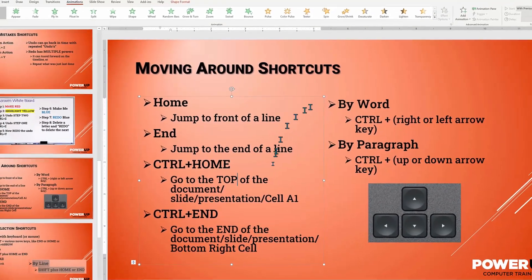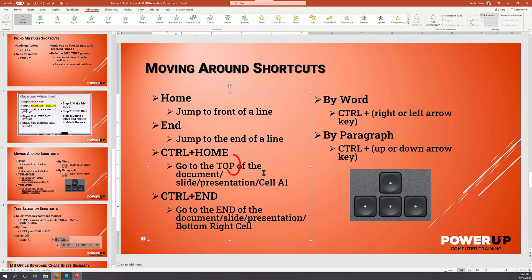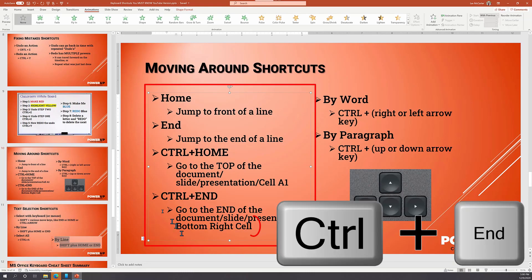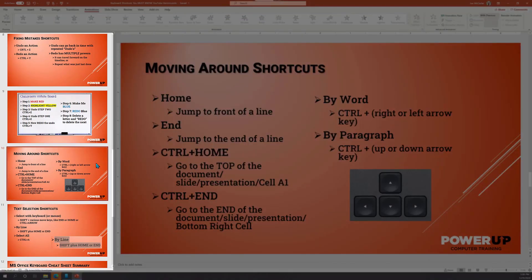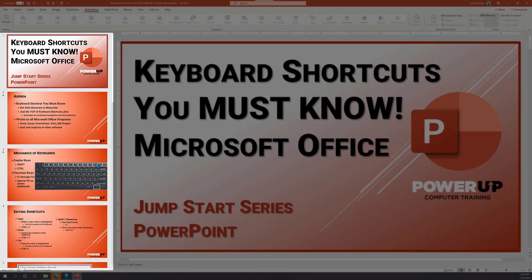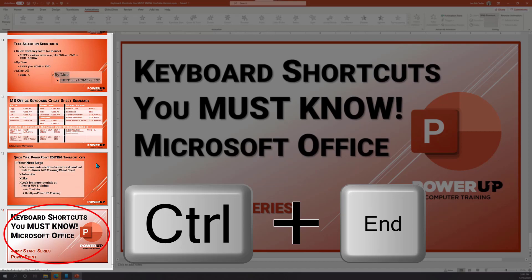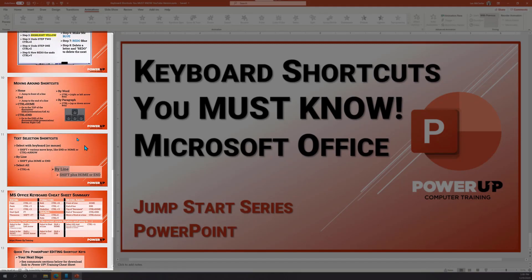The control plus home key will take us to the start of the text. The start of the text will vary based on where you're at in whichever program you're using. In PowerPoint, and in this particular case, it is the text placeholder that takes us to the top. And control end will take us to the bottom right corner. Now watch when we change context. I'm going to click on our slide thumbnails. And when I do control home, it takes me to the very first slide and control end will take me to the very last slide.